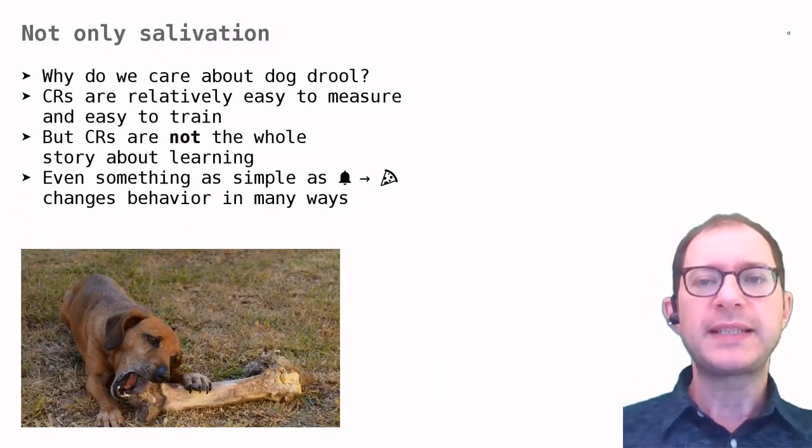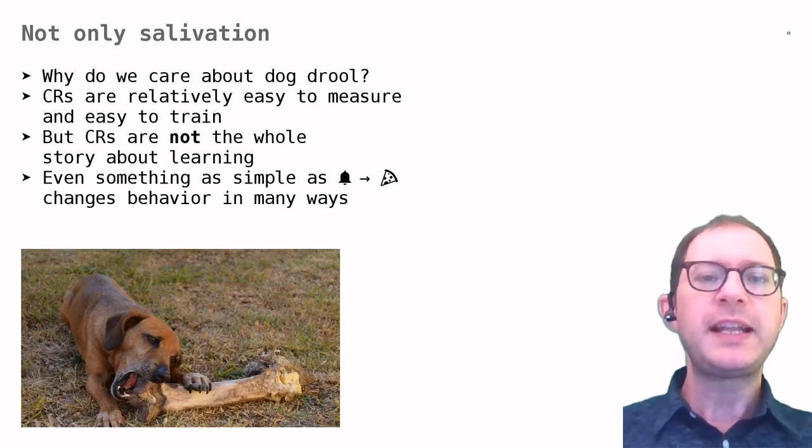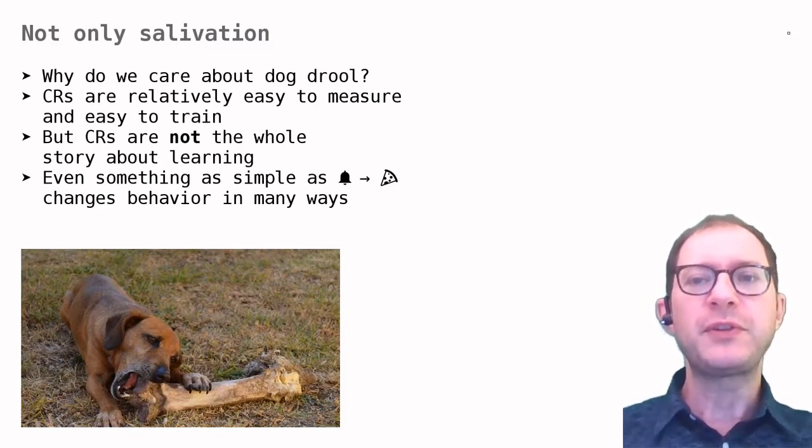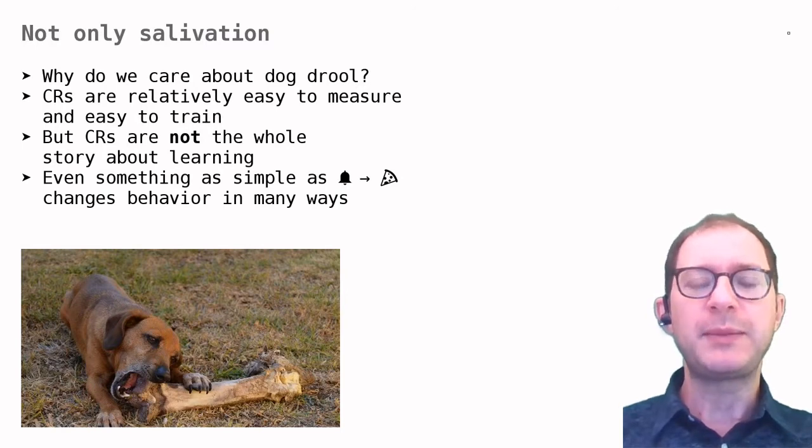Before we look at more examples of Pavlovian conditioning, let me clarify why research often focuses on weird behaviors like dog drool or rabbit eye blink. These behaviors have been chosen partly by accident, because someone found a way to measure them reliably and to train them relatively easily. For example, Pavlov could notice that salivation can be changed by learning because he was already measuring salivation as part of his studies on digestion.